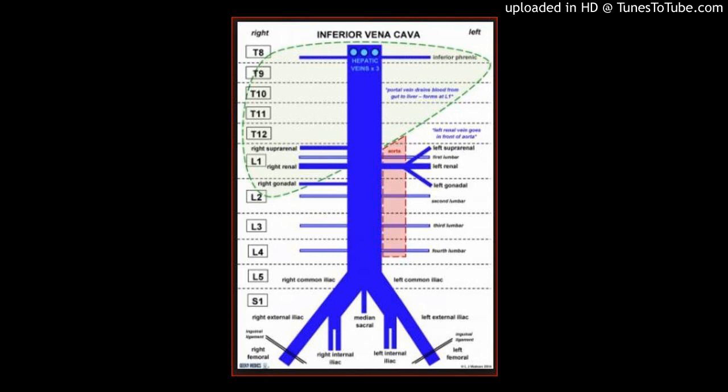However, IVC ligation was associated with significantly higher complication rates of extremity compartment syndrome: OR 5.23, 95% CI 1.50 to 18.24, and pneumonia: OR 1.76, 95% CI 1.08 to 2.86.